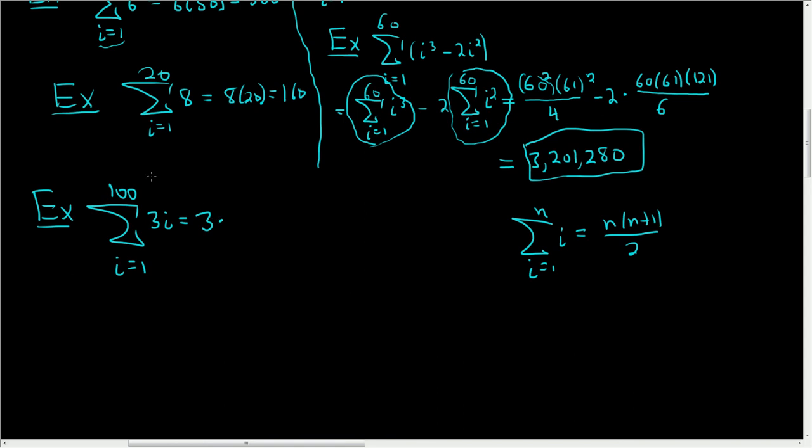You get times, and then n here is 100. So you have 100, then 101, and this is being divided by 2. If you put this in your calculator, you should get 15,150.